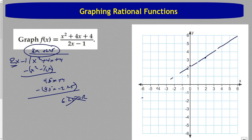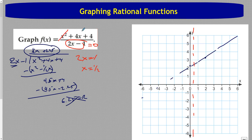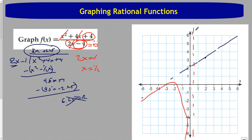For the vertical asymptote: set 2x minus 1 equal to 0, giving x equals 1/2. That's where our vertical asymptote is. Plugging in 0: the numerator gives 4, the denominator gives negative 1, so we're at negative 4. The function comes in and shoots down near the asymptote. Use a table around your vertical asymptote to get a few points to draw your curves.